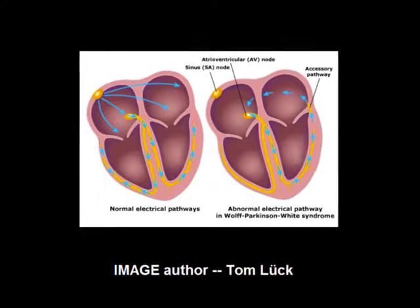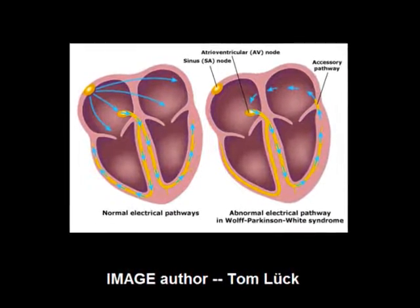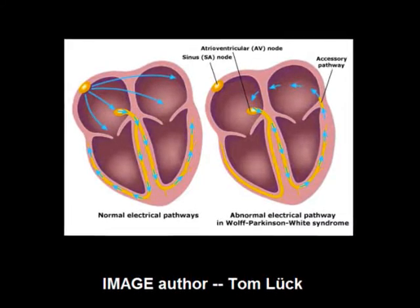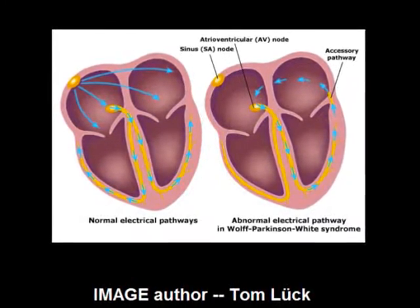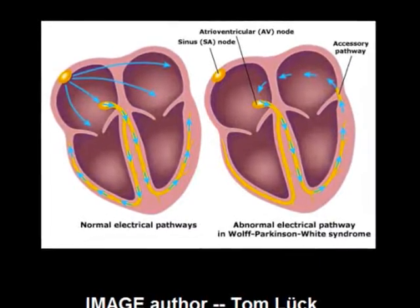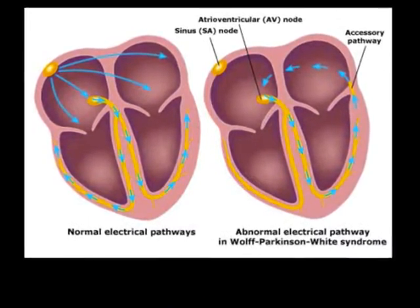As you can see in this image, in this syndrome there is an accessory circuit connecting the atria and ventricles. This is called the Bundle of Kent, and the impulse can travel independent of the AV node to the ventricles, causing pre-excitation of the ventricles. It is the most common type of ventricular pre-excitation syndrome.